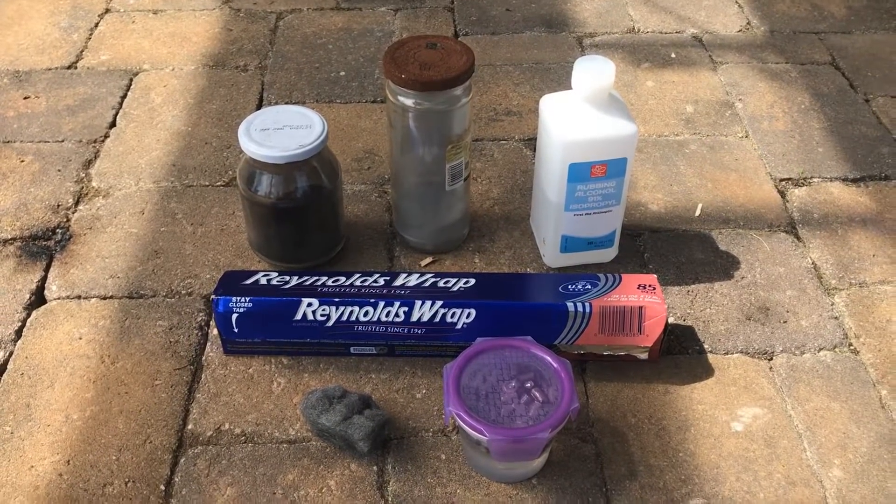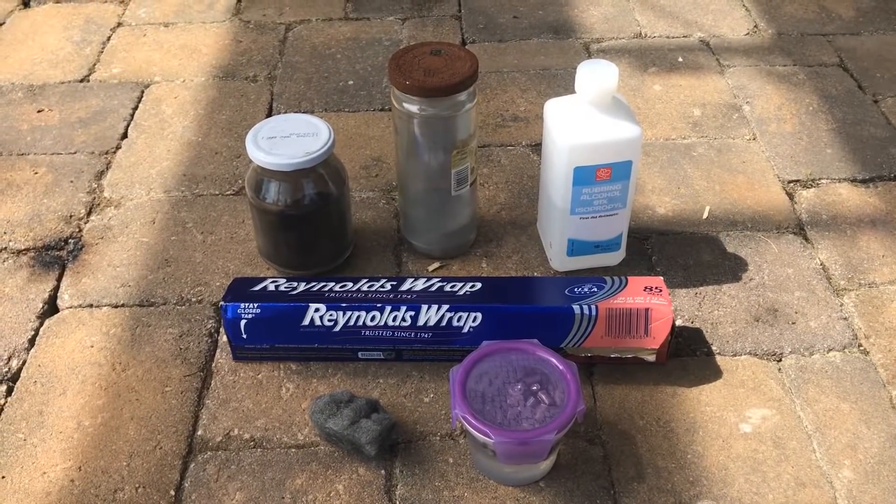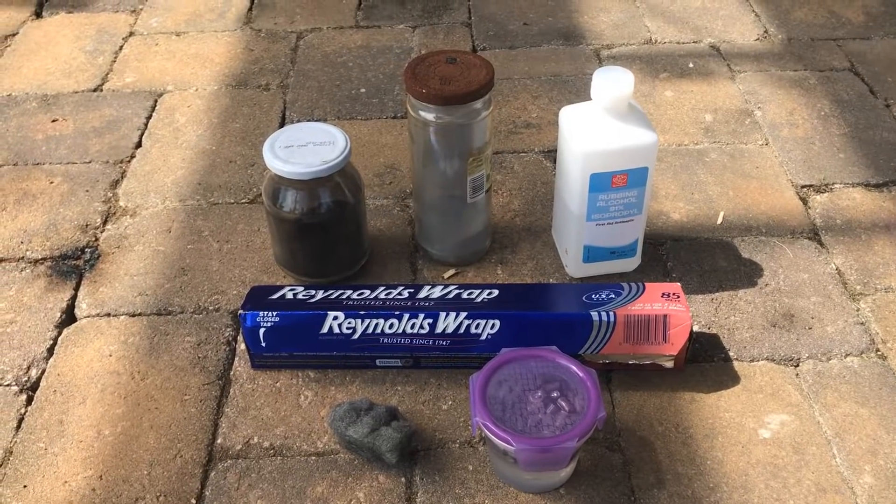Today we're going to be reacting carbon, aluminum, isopropyl alcohol, steel wool, and lithium metal with bromine.